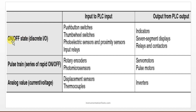For digital IOs, the first type is on/off state. Input devices include push buttons, switches, sensors, and relays. Digital outputs include indicators, lamps, displays, relays, and contactors. For analog IOs, transducers and transmitters come under analog input, while VFDs, inverters, and control valves are analog outputs. For pulse IOs, encoders and photo micro sensors are pulse inputs, and servo motors and pulse motors are pulse outputs. Depending on the IO type, we choose the IO modules.